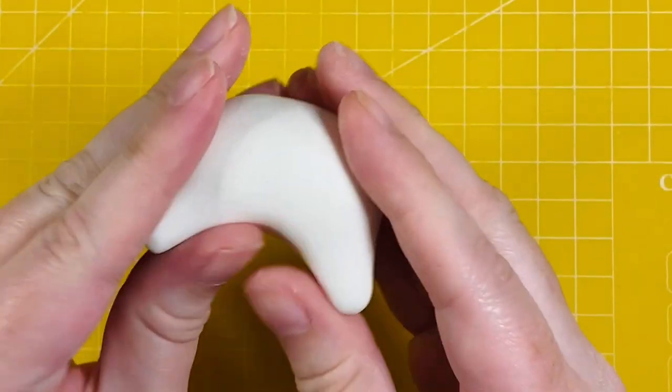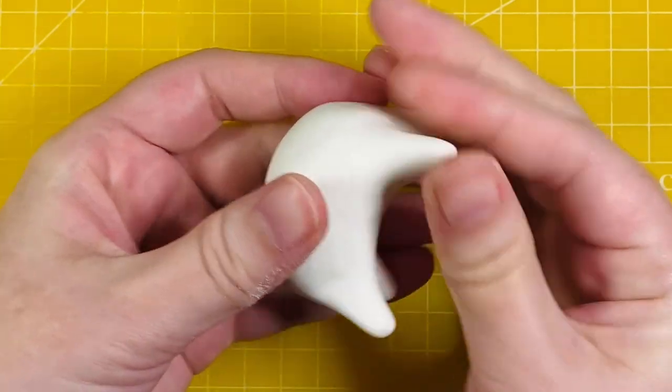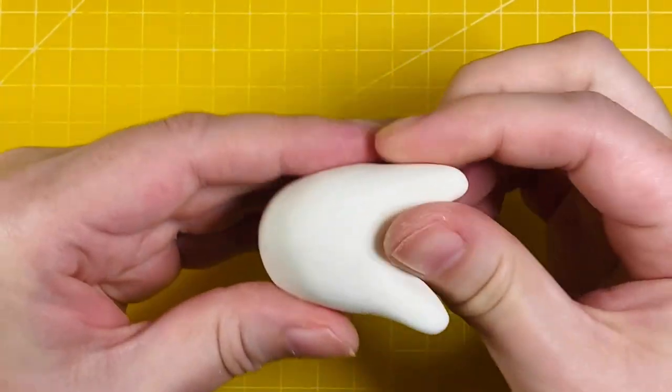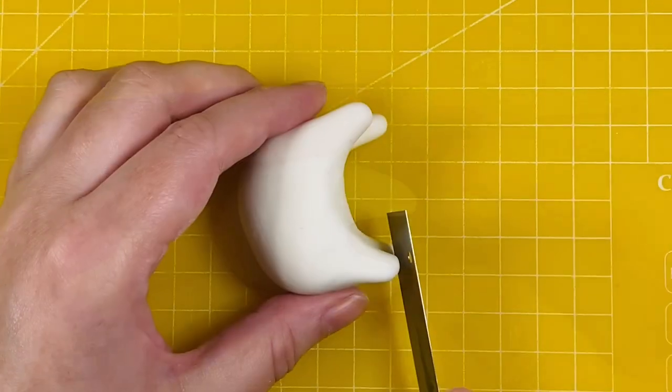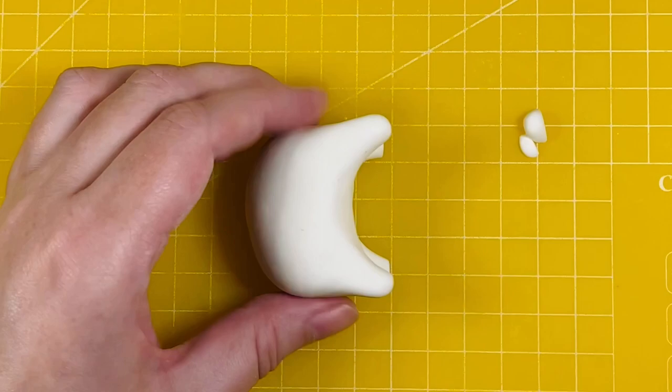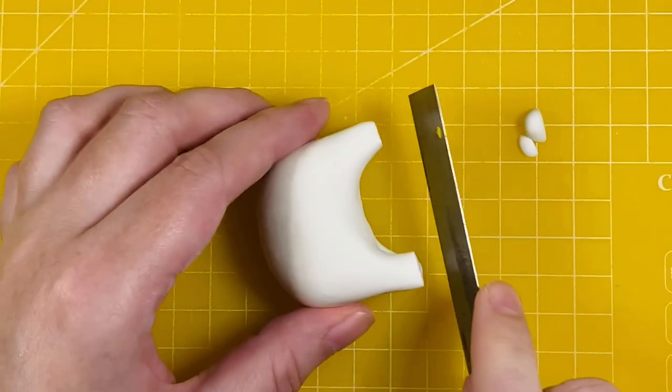At the moment I'm just stretching out the legs, making sure they're all even, so we've got four even sized legs so he's going to stand up properly. I'm now chopping the ends off just to make the base of the legs nice and even so that when I add the hooves on, they go on to a nice smooth surface.